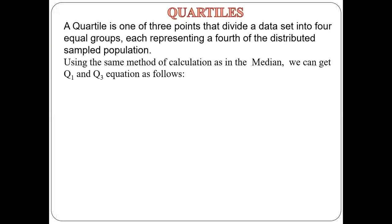A quartile is one of the three points that divide a dataset into four equal groups, each representing a fourth of a distributed sample population. These three points are the lower quartile, upper quartile, and the median.